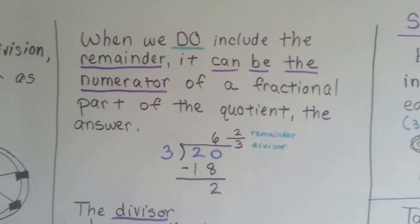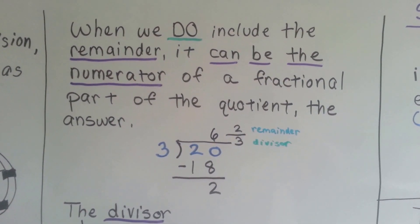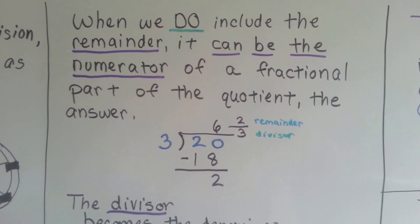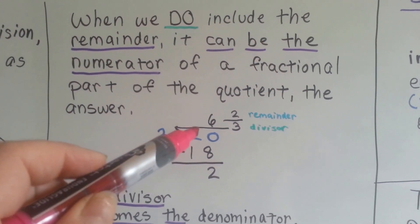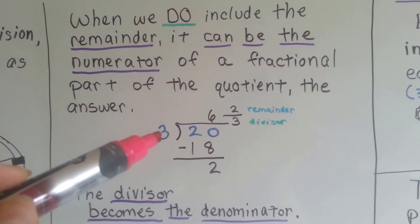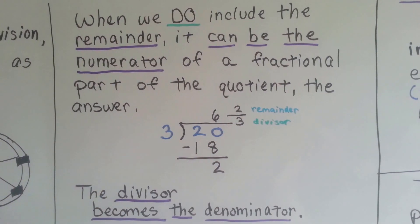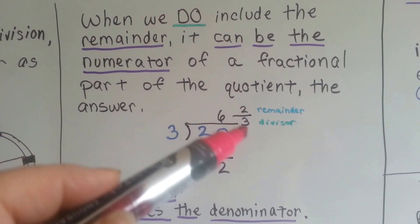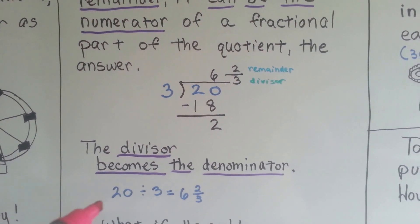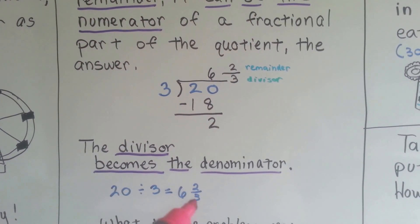When we do include the remainder, it can be the numerator of a fractional part of the quotient. The answer. The remainder 2 becomes the numerator, and the divisor becomes the denominator. 6 and 2 thirds is left over. So the divisor becomes the denominator as the thirds.